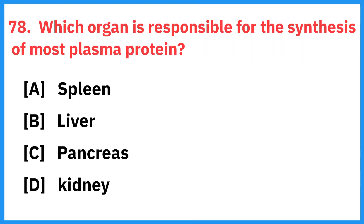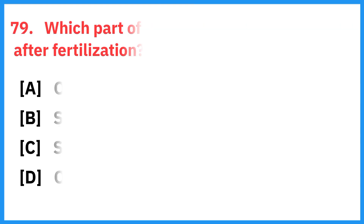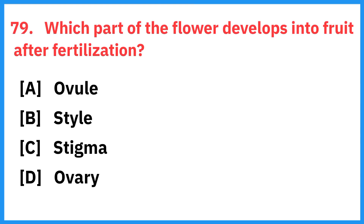Which organ is responsible for the synthesis of most plasma proteins? Right answer is liver. Which part of the flower develops into fruit after fertilization? Right answer is ovary.